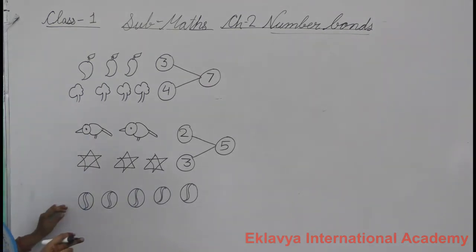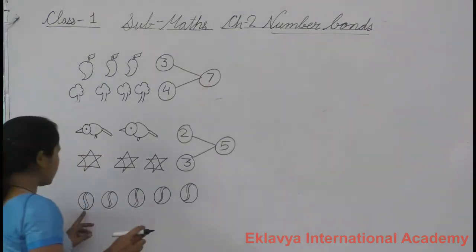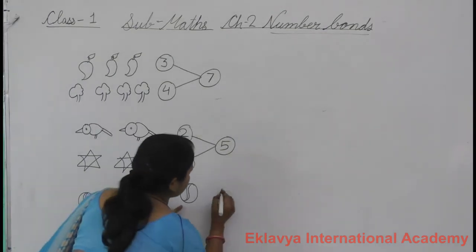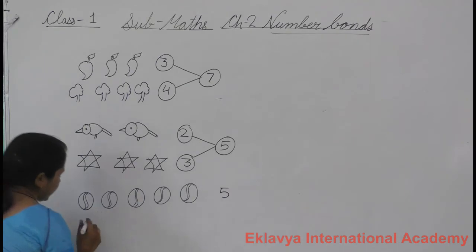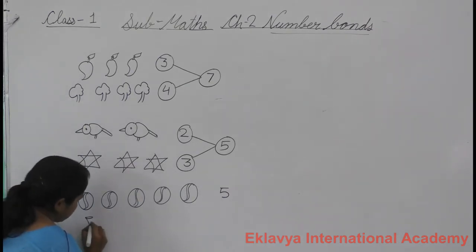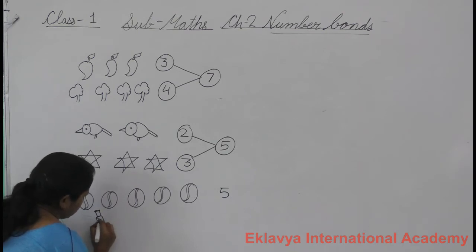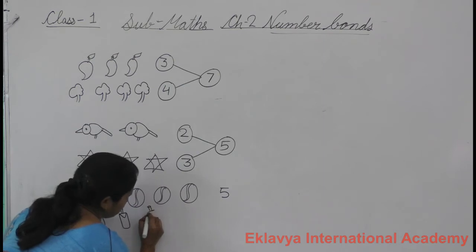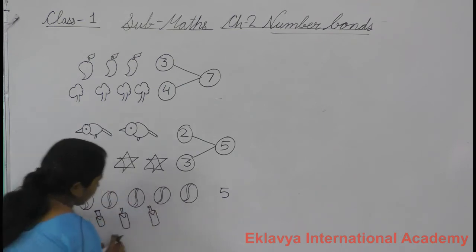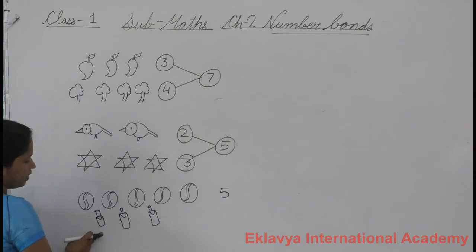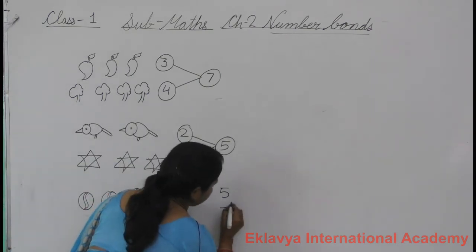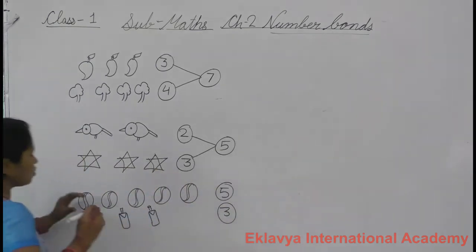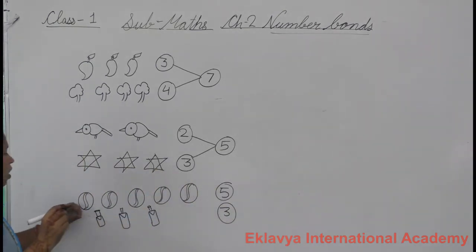Count the balls. How many balls are there? One, two, three, four, five. Five balls. How many bats are there? One, two, three. Three. So count both balls and bats together.